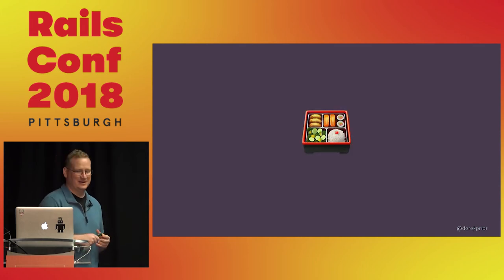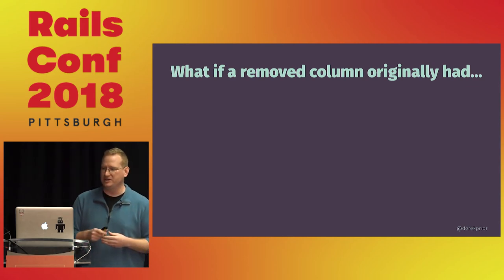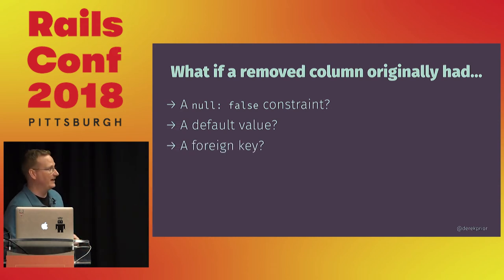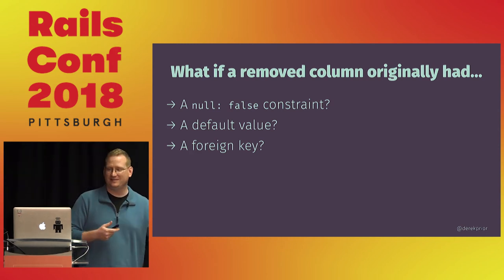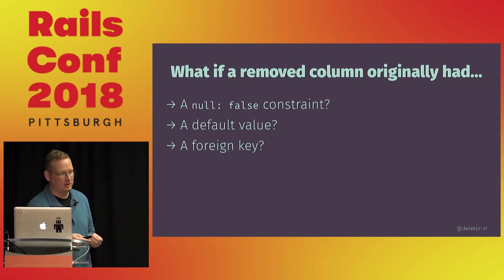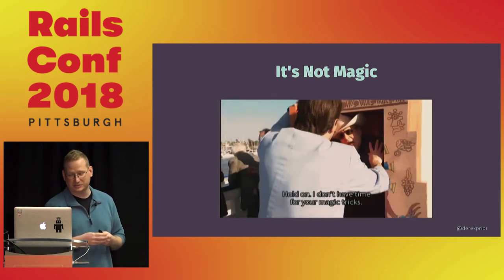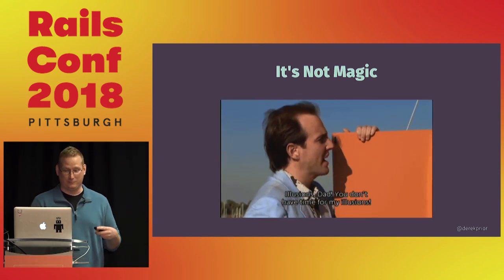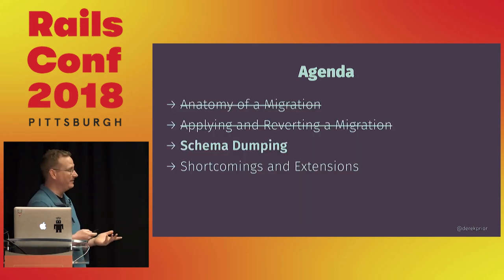But remember, there's no such thing as a free lunch. What if one of those columns we removed in the original migration had a null: false constraint, a default value, or a foreign key? We still need to actually think about how we'd write that down method — we don't really get it for free because it's not magic. The only way to tell that you've actually successfully written the change migration properly is to migrate your database, roll it back, and then check for a difference in your schema.